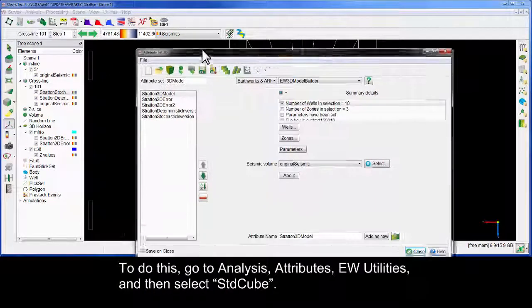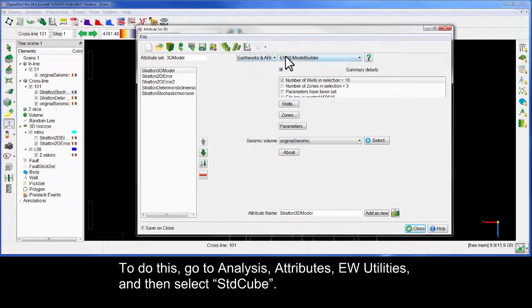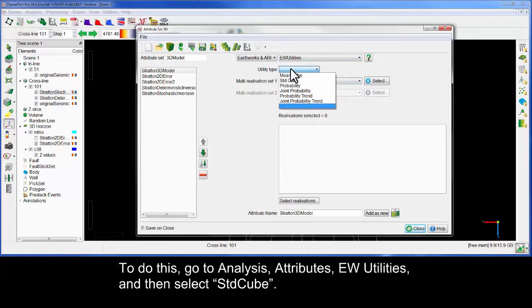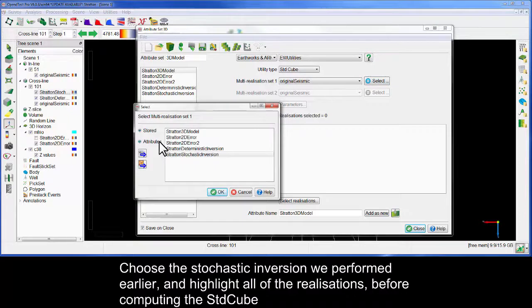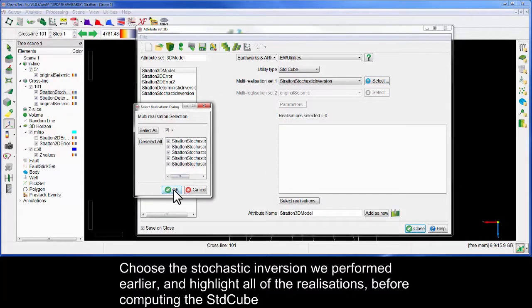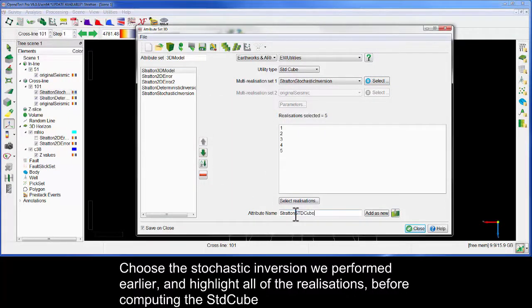To do this, go to Analysis, Attributes, E-double Utilities and then select STD cube. Choose the stochastic inversion we performed earlier and highlight all of the realizations before computing the STD cube.